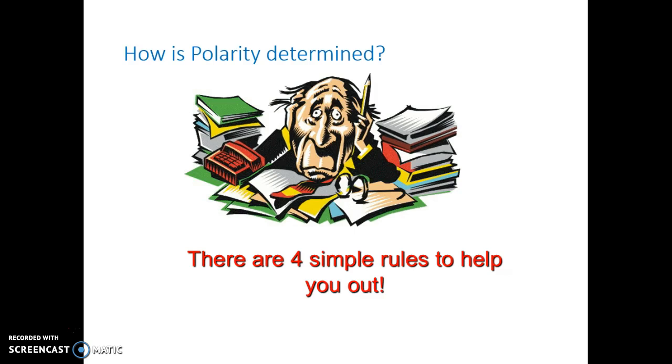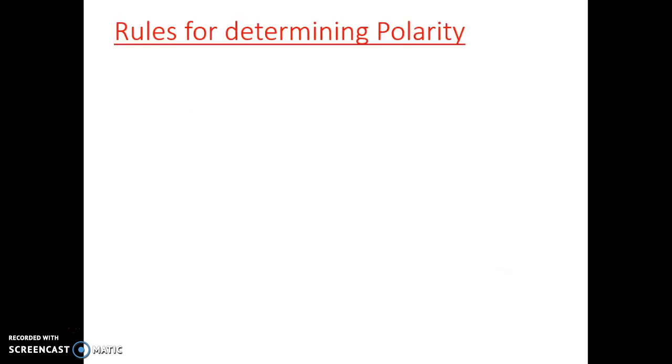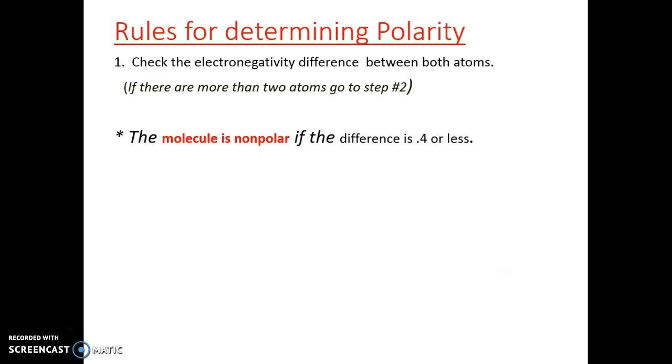So how is polarity determined? Some simple rules. First, check the electronegativity difference between the atoms. If there are more than two atoms, you have to go to step number two. But if not, we have two atoms. The molecule is nonpolar if the difference is 0.4 or less. The molecule is polar if the difference is 0.5 or greater. Some people vary on this, but we're just going to kind of stick to this kind of idea. 0.4 or less means nonpolar. 0.5 or greater means polar.